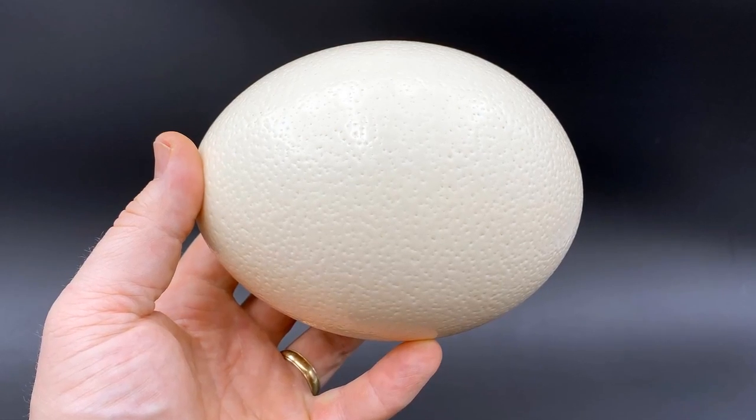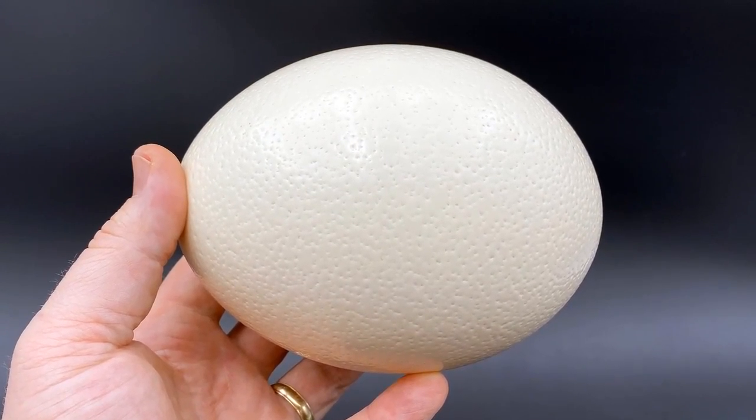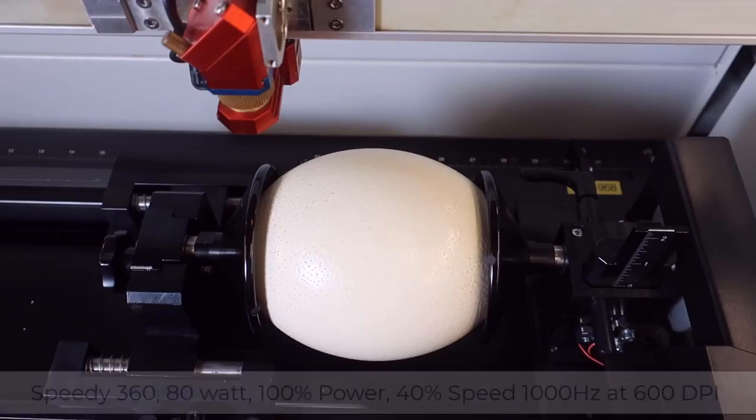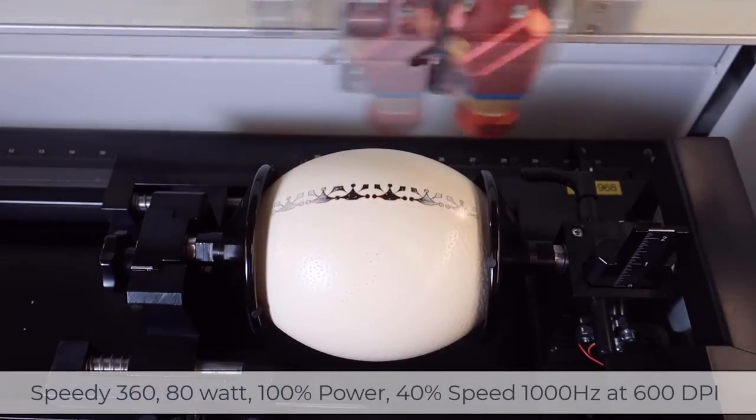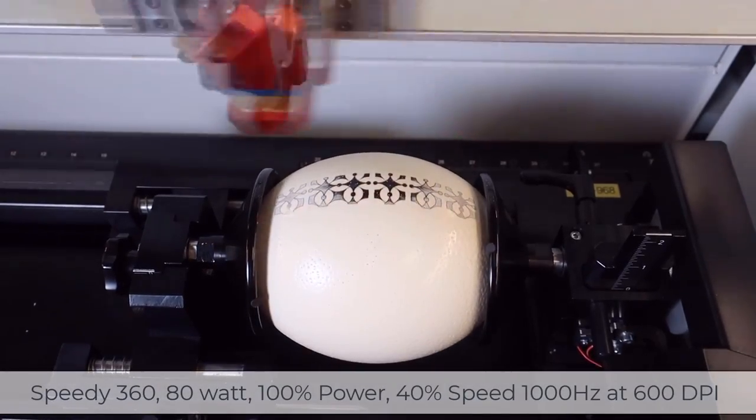Now let's take things a step further by trying to engrave an ostrich egg. We've chosen to use the same settings as our smaller eggs although we've doubled our DPI to 600. We've also scaled up our setup to a four inch lens.